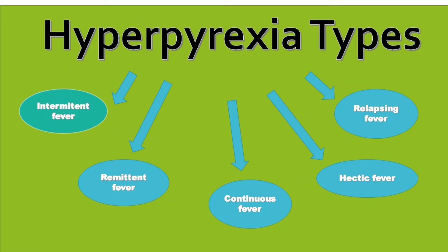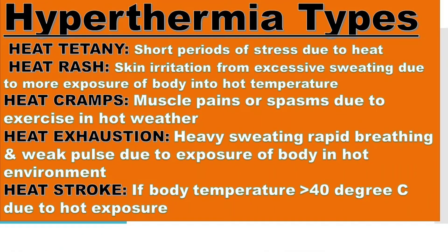Now I am going to explain in detail about the types of hyperthermia. The first one is heat tetani. Heat tetani is when you expose your body to a hot environment, maybe in sunlight, for a long period — that leads to giddiness and there may be chances to faint. The second one is heat rash. When you expose your body to heat for a long period, there may be chances of excessive sweating that leads to skin irritation.